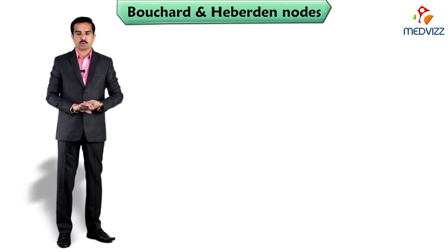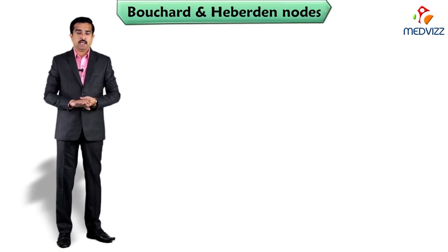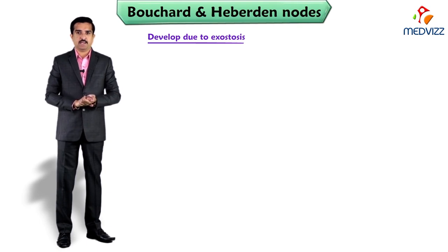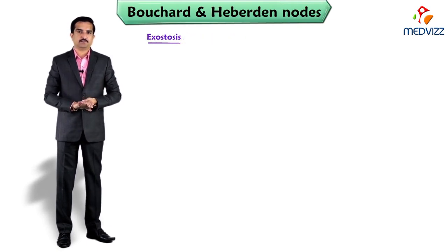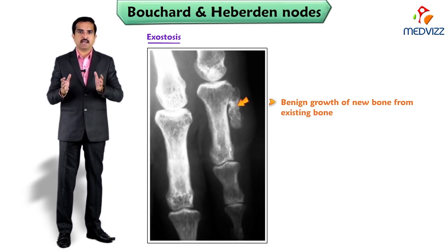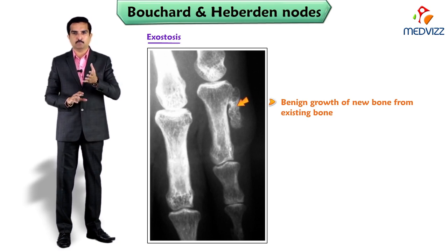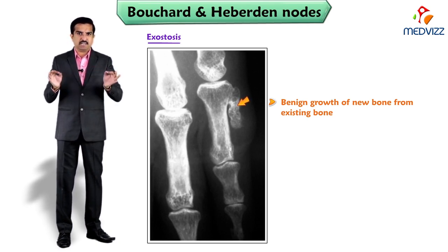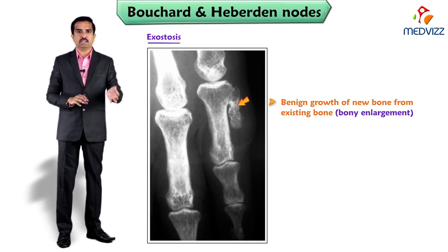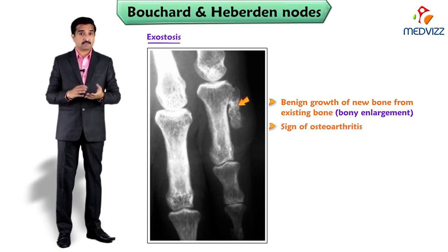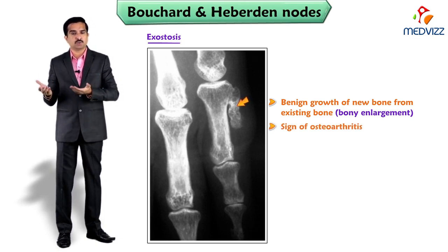Bouchard and Heberden nodes. A Heberden or Bouchard node develops due to exostosis. Exostosis is a benign growth of new bone out of existing bone — in simple language, a bony enlargement and a sign of osteoarthritis.